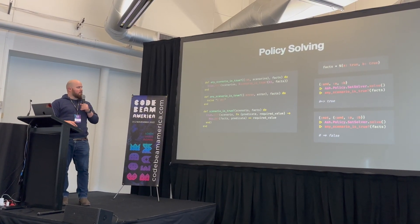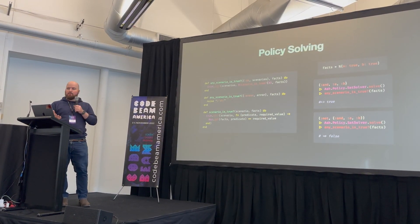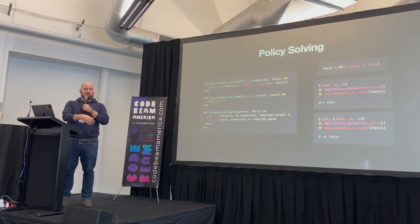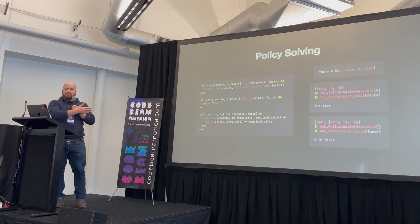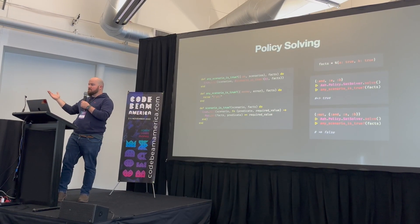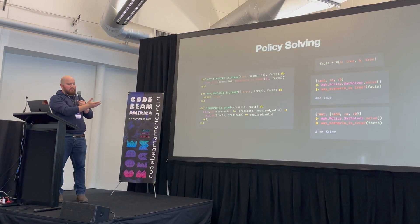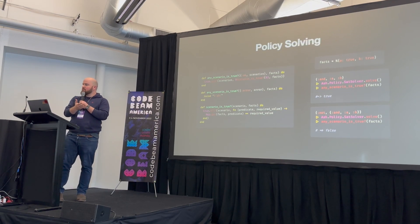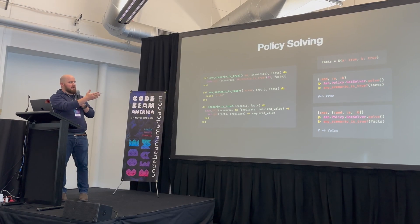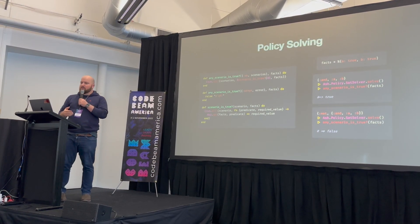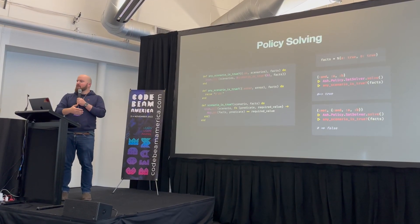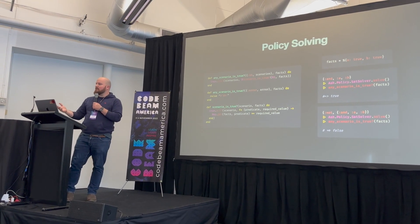So what I'm going to talk about is how we use this in Ash Framework to solve for policies. This is pseudo-code — a little example, a bit more complex under the hood — but you can see that given a set of facts, like values for A and B, like A is actually true and B is actually false, we can run this code and say are any of these scenarios true? Are they actually the true scenario? Given those facts, if you have a policy like you can do this action if these things are true, you can say are any of them true or false? And this can be really useful for different kinds of logic.